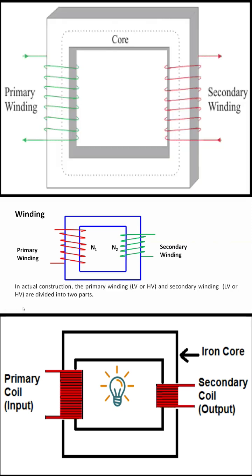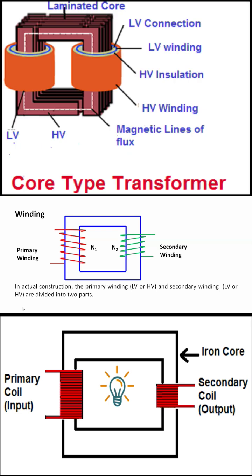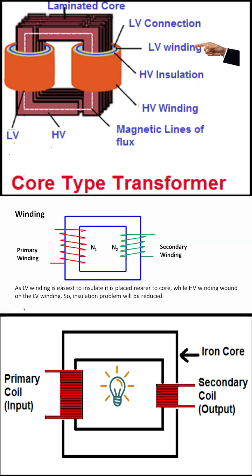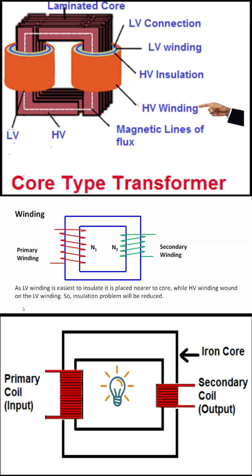In actual construction, the primary winding — LV or HV (low voltage and high voltage) — and the secondary winding — LV or HV — are divided into two parts. Since the LV winding is easiest to insulate, it is placed nearer to the core, while the HV winding is placed along the outside of the LV winding, so the insulation problem will be reduced.